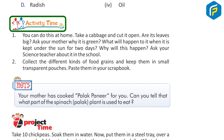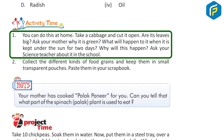Activity Time. 1. You can do this at home. Take a cabbage and cut it open. Are its leaves big? Ask your mother why it is green. What will happen to it when it is kept under the sun for two days? Why will this happen? Ask your science teacher about it in school.